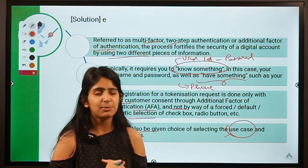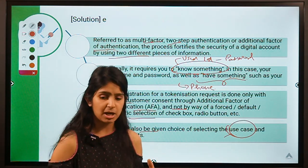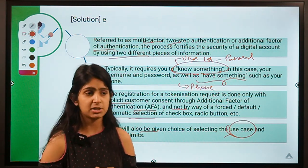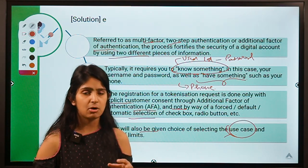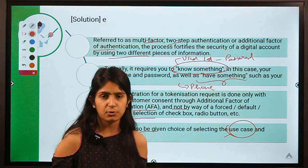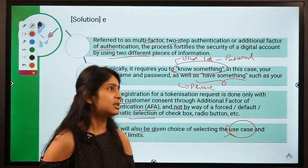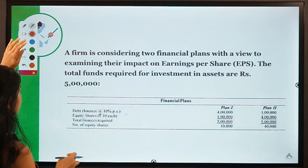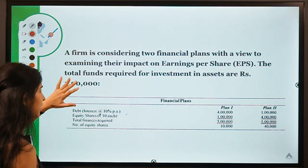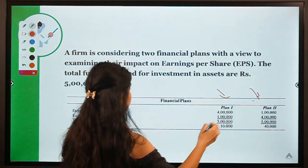That was all about tokenization. Before ending, let me address some doubts about financial leverage and operating leverage. The question was: how does increasing the debt component lead to more earnings for shareholders? Here is a company with two plans — in Plan One, the debt component is higher than the equity component (debt of four lakh, equity shares of one lakh), whereas in Plan Two this is reversed.